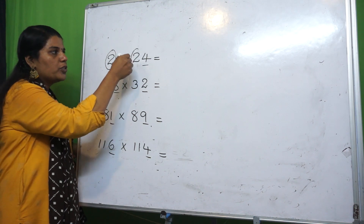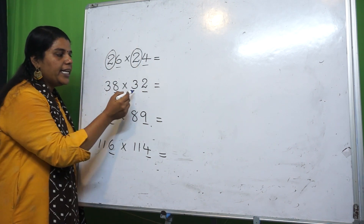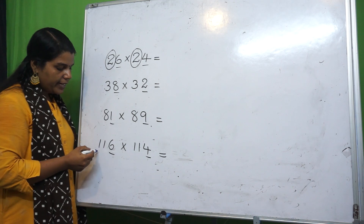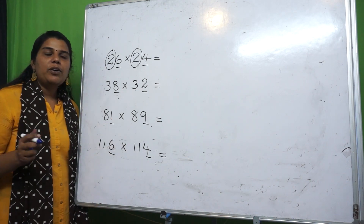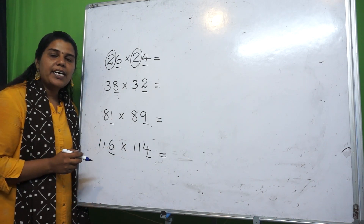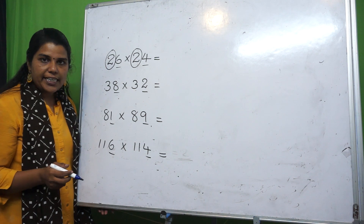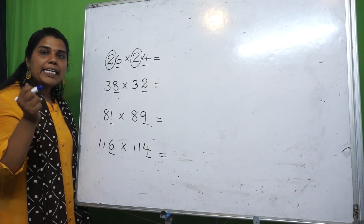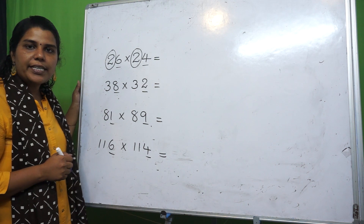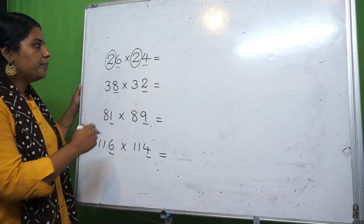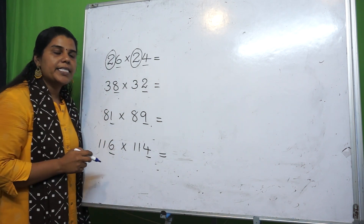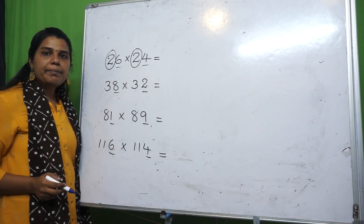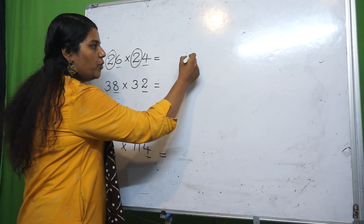The tens digits are the same: 2 and 2 same, 3 and 3 same, 8 and 8 same, 11 and 11 same. Once the ones digits add up to 10 and the tens digits are the same, you can use this technique. You can find the product. To do so, multiply the ones digits: 6 and 4, multiplied gives 24.